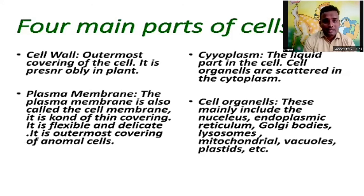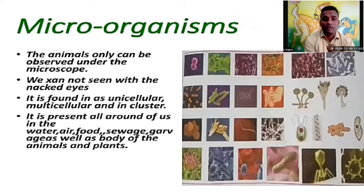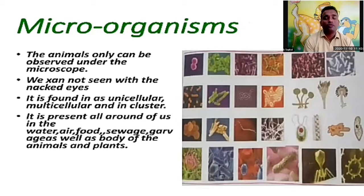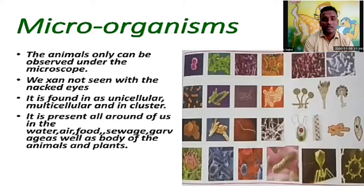The next type is microorganisms. The name 'microorganism' means it is very small. You can see on the screen various shapes. These organisms can only be observed under a microscope — we cannot see them with the naked eye. If you want to study or observe microorganisms, you have to use a microscope. They are found as unicellular, multicellular, and in clusters.